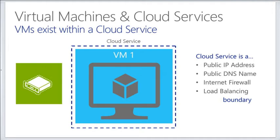Virtual machines were not the initial goal of Azure — that came later. What we did is we built a service that then has a virtual machine fitting underneath it. A cloud service in this graphic wraps around the VM. The VM lives underneath this cloud service. A cloud service basically has a public IP address, a public DNS name, an Internet firewall, and a load balancer — it's a boundary.